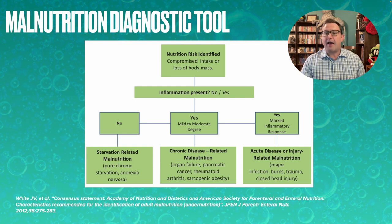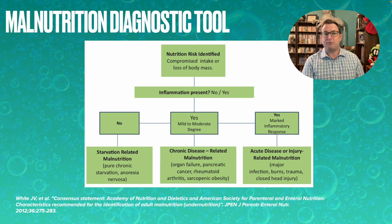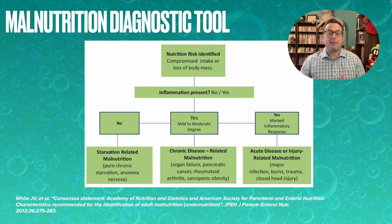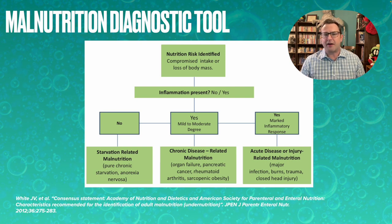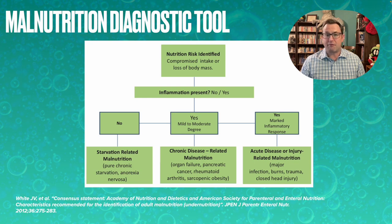On one end there's no inflammation present, in which case it's classic starvation. On the other end, there's acute disease or injury-related inflammation — a broken long bone, a severe burn, a very bad infection. That is the only laboratory criterion that AND and ASPEN recommend.